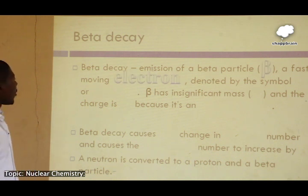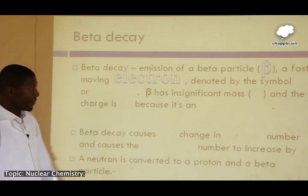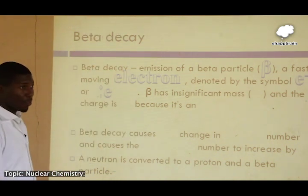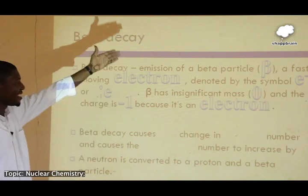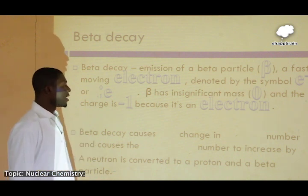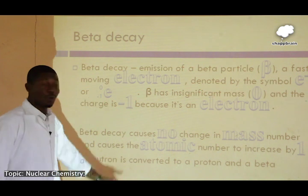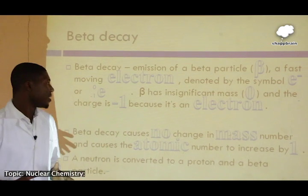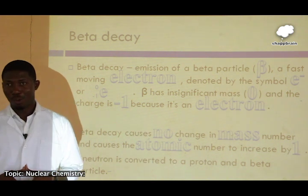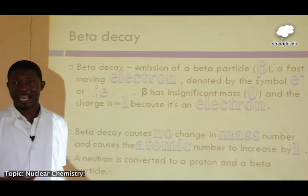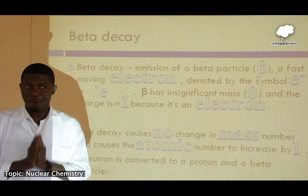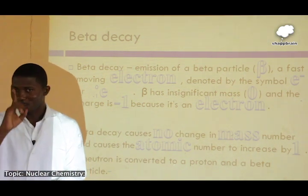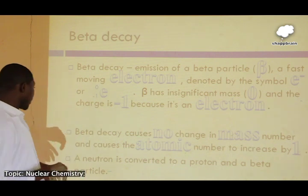Beta decay involves the emission of a beta particle — a fast-moving electron represented by e-0-(-1), with an insignificant mass of zero and a charge of negative one. Beta decay causes no change in mass number, so the mass number remains unchanged. However, it causes the atomic number to increase by 1, unlike alpha decay which decreases the atomic number by 2.